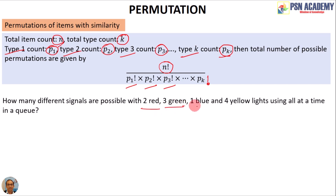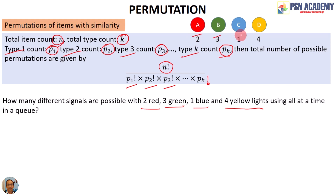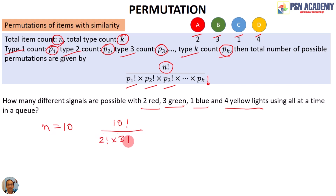Example: how many different signals are possible with 2 red, 3 green, 1 blue, and 4 yellow lights using all lights at a time? Total n = 2+3+1+4 = 10. By the formula, the total arrangements = 10! / (2! × 3! × 1! × 4!). These are the different signals you can have using all the lights at a time.